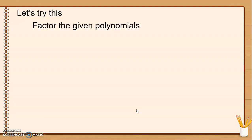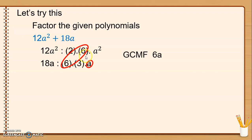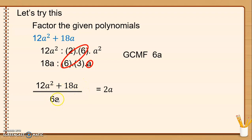Another example: 12a squared plus 18a. Find the GCMF. 12a squared is 2 times 6 times a squared. 18a is 6 times 3 times a. Common is 6 and a, so GCMF is 6a. Then divide: 12a squared divided by 6a equals 2a. 18a divided by 6a equals 3. Combine step 1 and step 2 as a product: the answer is 6a times (2a plus 3).